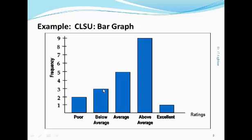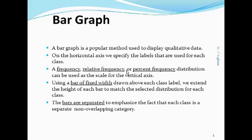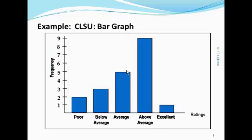The below average class had a frequency of 3. Above average had a frequency of 5. The bars are separated to emphasize the fact that each class is a separate, non-overlapping category.